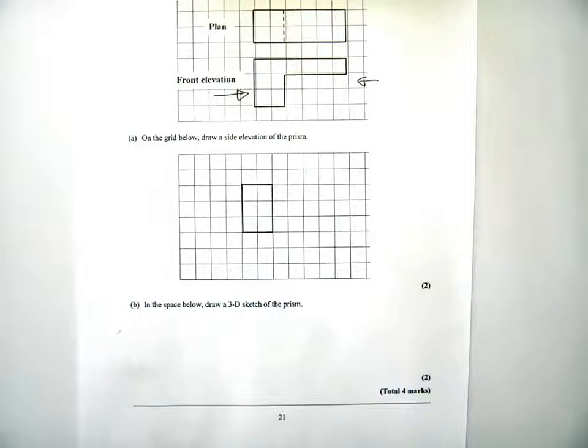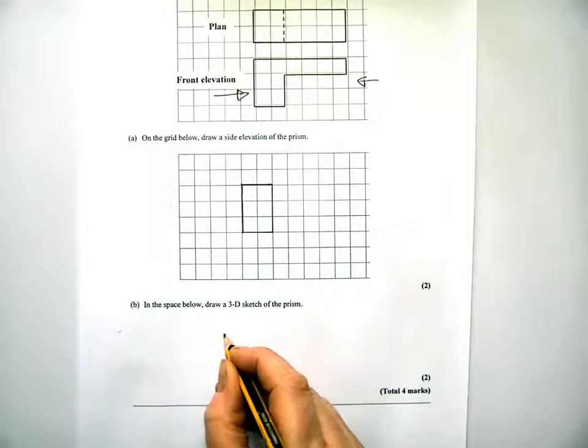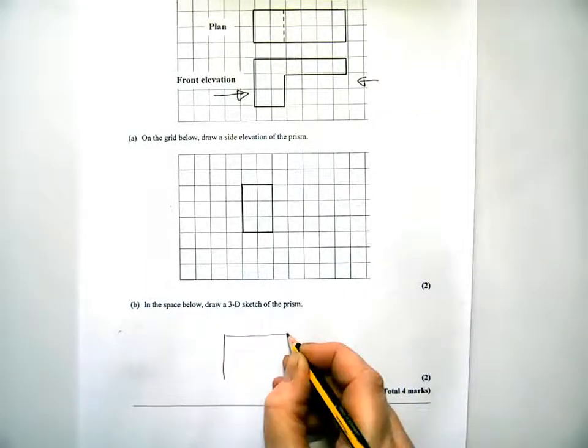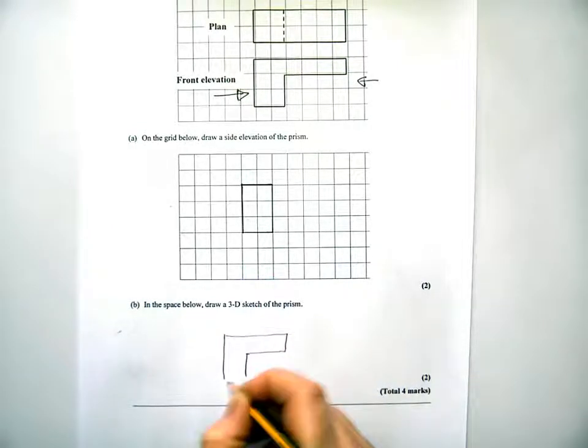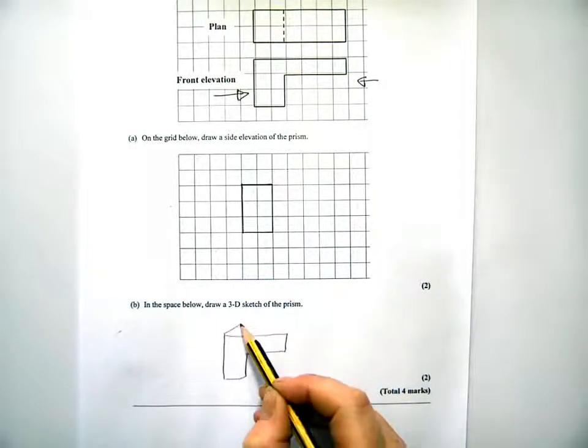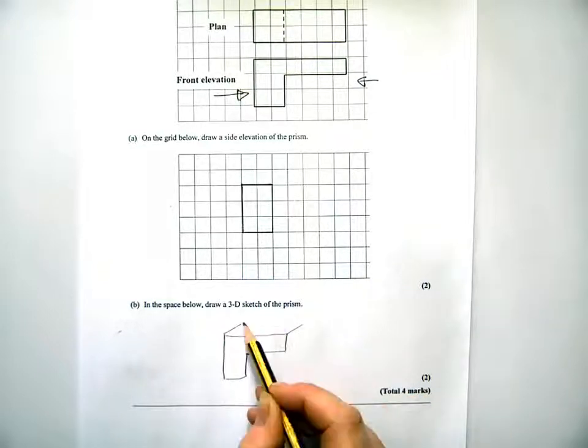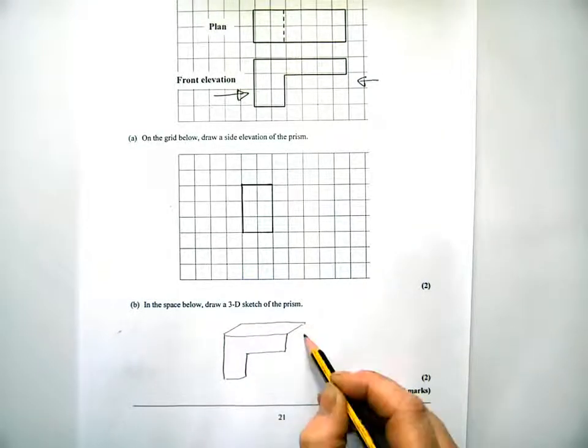So part B, in the space below, draw a 3D sketch of the prism. So you're going to have the cross-section. And then the 3D prism.